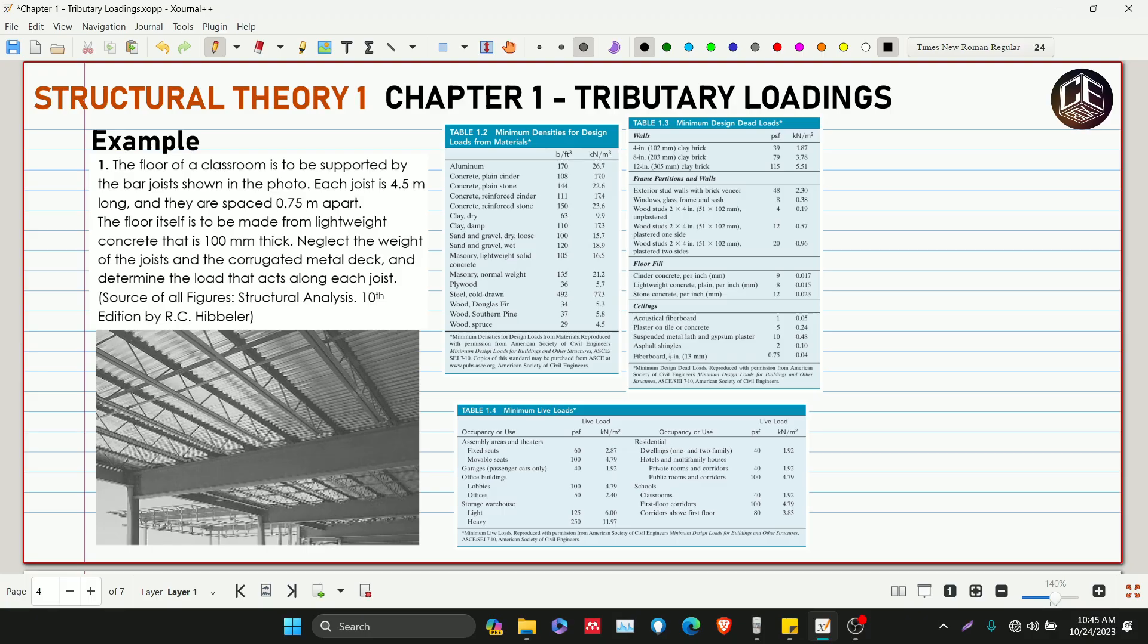Hey guys, welcome back to CeBox tutorial channel and this is our example number one for the topic tributary loadings. The floor of a classroom is to be supported by a bar joist shown in the photo. Each joist is 4.5 meters long and they are spaced 0.75 meters apart. The floor itself is to be made from lightweight concrete that is 100 millimeters thick. Neglect the weight of the joist and the corrugated metal deck.